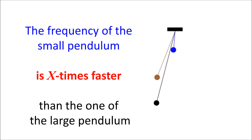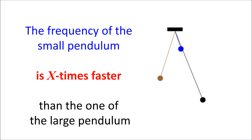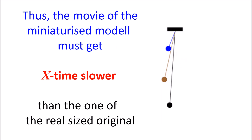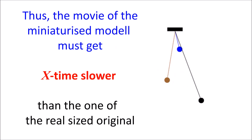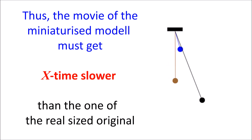The frequency of the small pendulum is x times faster than the one of the large pendulum. If you want to make the small pendulum move like a large one, we have to slow it down.